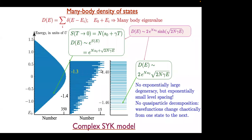When you have quasi-particles, the first excited state is just removing or adding one electron — a small deformation of the many-particle state. Here, that's not the case. That's the basic physics this simple model captures: exponentially large, densely packed low-energy states which are chaotically different from each other.